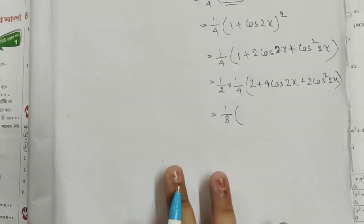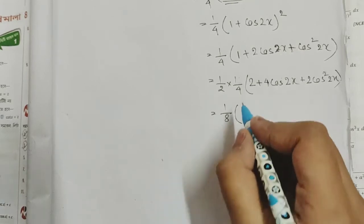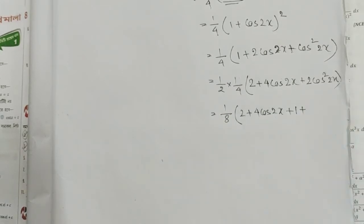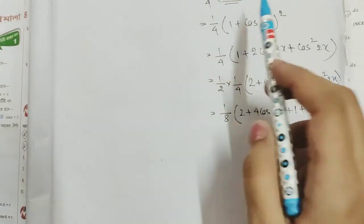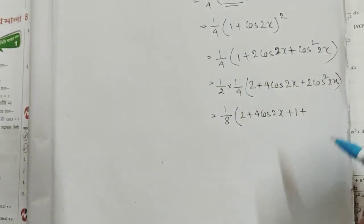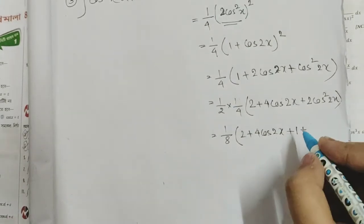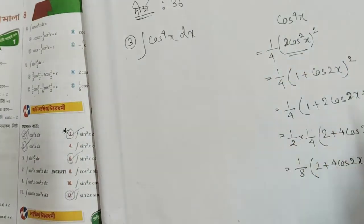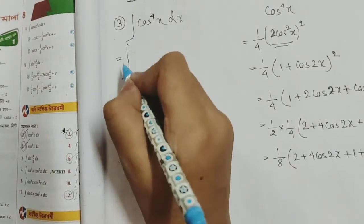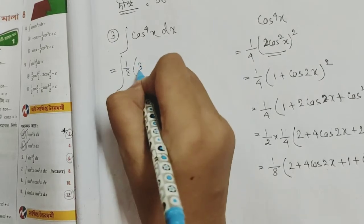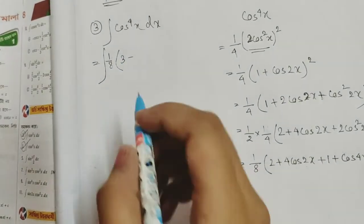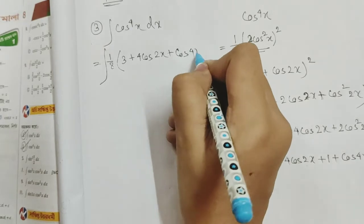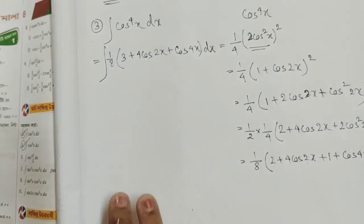So 1 by 8, and the formula is 2 plus 4 cos 2x. Now 2 cos squared 2x equals 1 plus cos 4x. So we have 1 plus 2 cos squared 2x, that's 1 plus cos 4x. The integral becomes: cos squared 2x plus cos 4x dx. Adding: 2 plus 1 equals 3, giving 3 plus 4 cos 2x plus cos 4x dx.